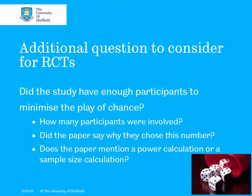Sufficient power means there were enough participants to detect a difference between the control group and the intervention group. Look in the paper to see why the researchers chose the sample size they did, and look for mentions of a power calculation or sample size calculation. If the authors chose the sample size based on a power calculation specific to the primary outcome, you will know the study had enough participants to establish that any differences were due to a real difference and not just a chance finding.